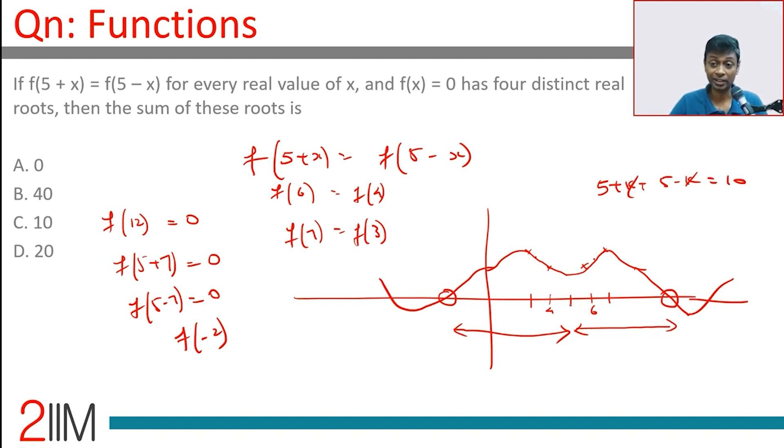Roots come in pairs. Sum of any one pair is 10. There are four roots, two pairs, 20. Roots have to be of the form five plus k and five minus k. They have to come in pairs. Five plus k plus five minus k is 10. Two such pairs, 20.